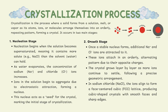The process of crystallization occurs in two main stages: nucleation and growth. In the first stage — nucleation — crystallization begins when the solution becomes supersaturated, meaning it contains more solute like sodium chloride than the solvent, which is water, can hold. As water evaporates, the concentration of sodium Na+ and chloride Cl- ions increases. These ions aggregate due to electrostatic attraction, forming a nucleus, which acts as a seed for crystal growth, marking the first stage of crystallization.